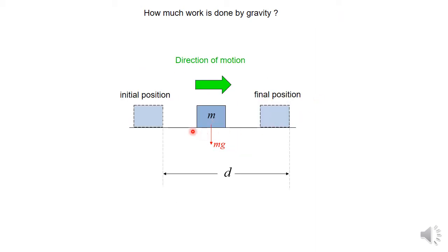What about the case where you have a horizontal table and the mass is being pushed from an initial position to a final position along the horizontal surface? The work done by gravity is zero.